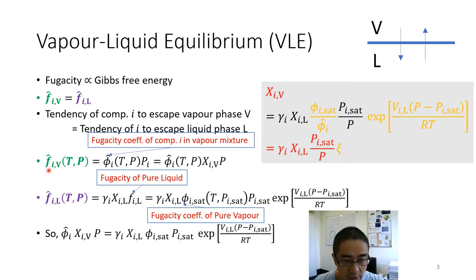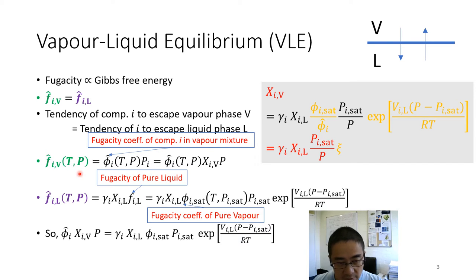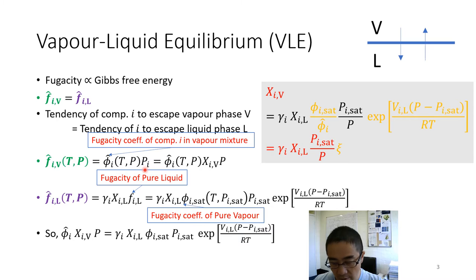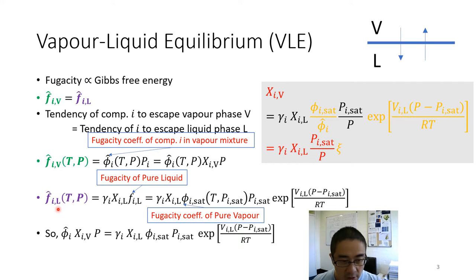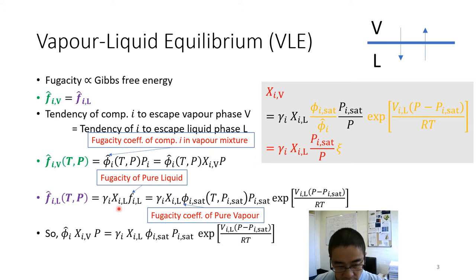The two fugacities should be equal for a component in the vapor phase and in the liquid phase. In the vapor phase, the fugacity is determined by the fugacity coefficient of component i in the vapor mixture times the partial pressure. For the liquid component, it is determined by the activity coefficient, the mole fraction of the component in the liquid mixture, and the fugacity of the pure liquid.